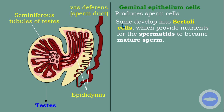Some germinal epithelium cells develop into Sertoli cells. Sertoli cells are special cells that provide nutrients for the spermatids to become matured sperm. After meiosis, the sperm is immature — it is just the head with no tail and no middle piece. These parts must grow so that the sperm can swim when it moves inside the female reproductive system.